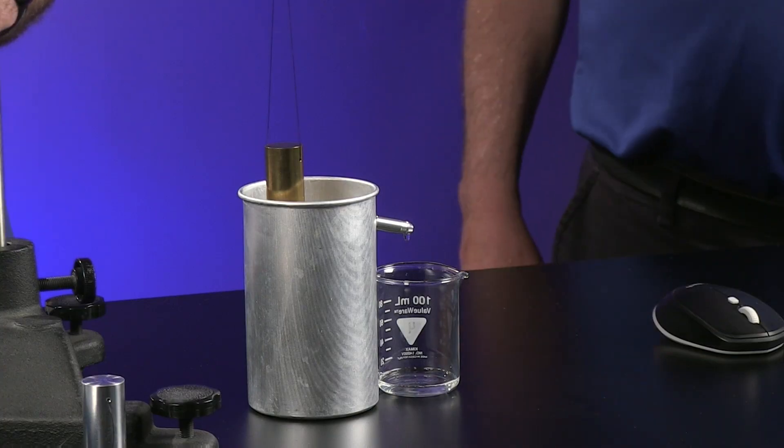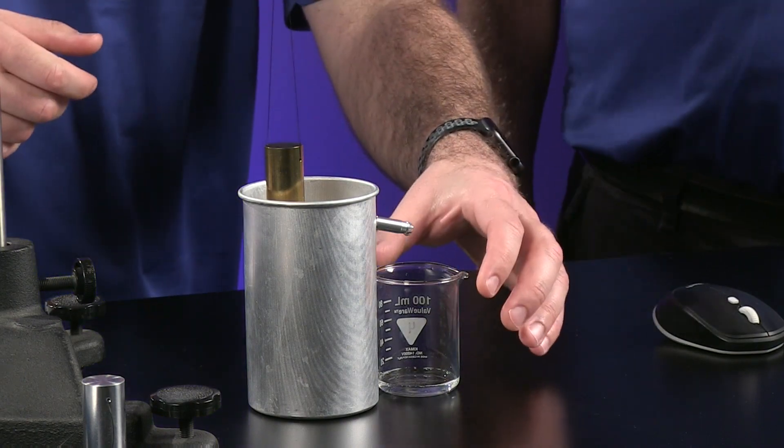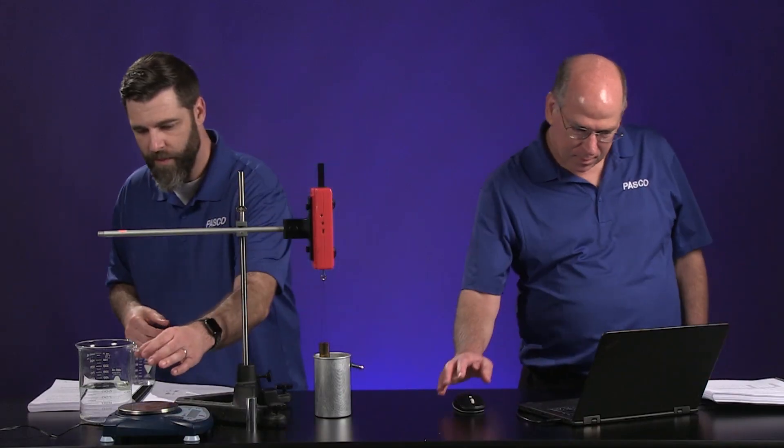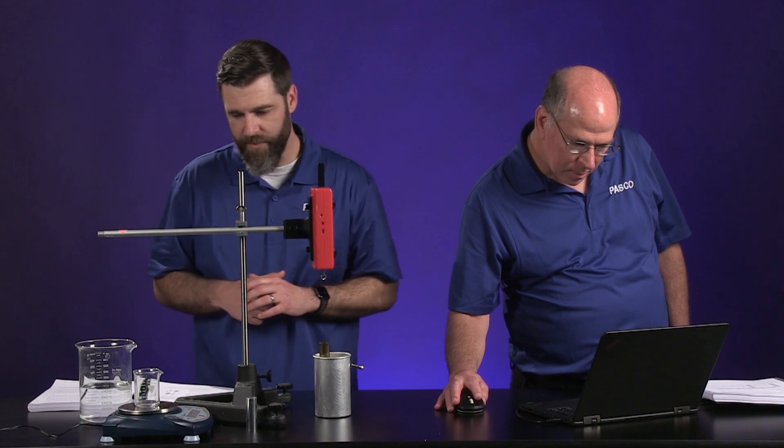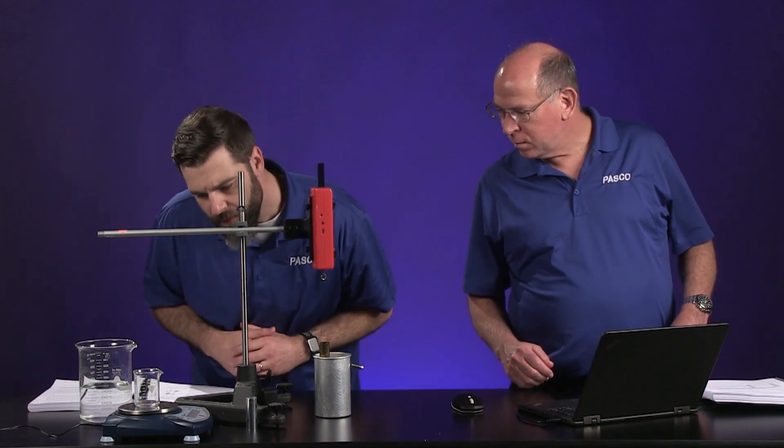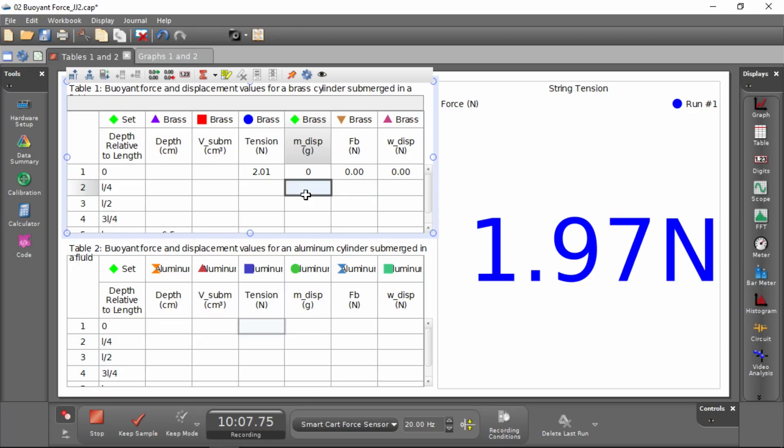I'm going to take this, put it on our balance, and it reads 5.26 grams. I'll enter that. And then the tension definitely went down. It's fluctuating between 1.96 and 1.97.